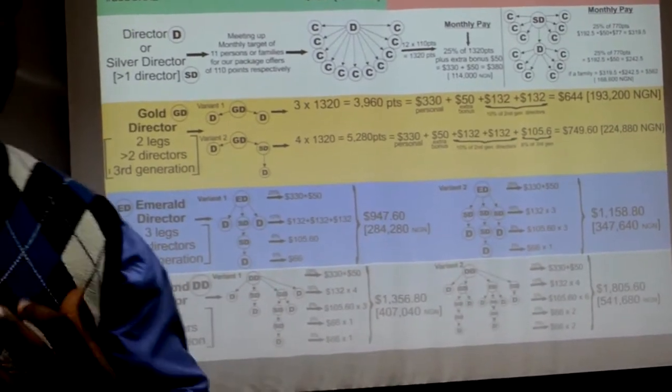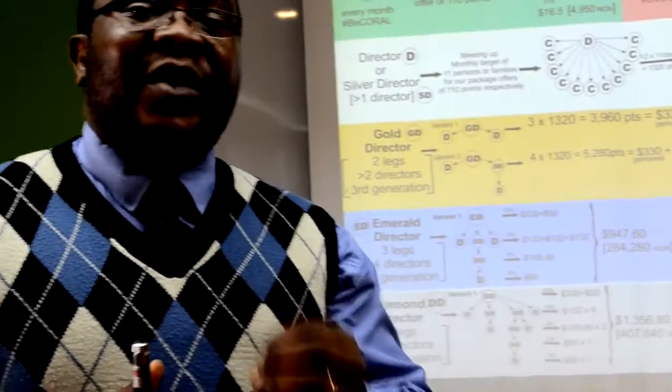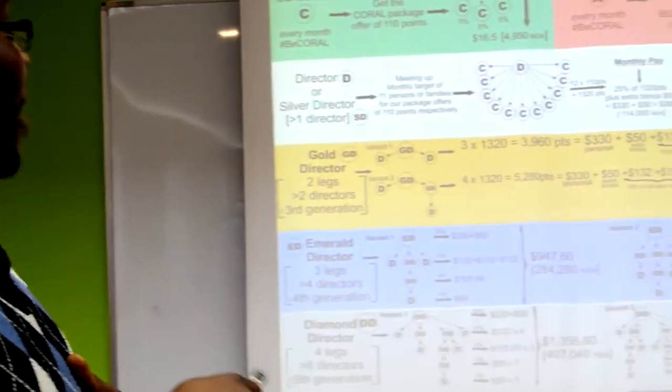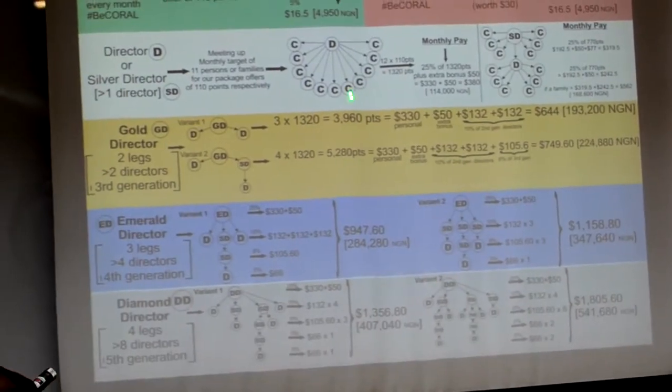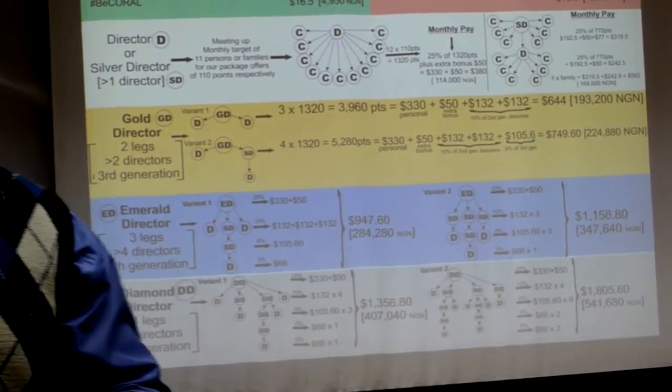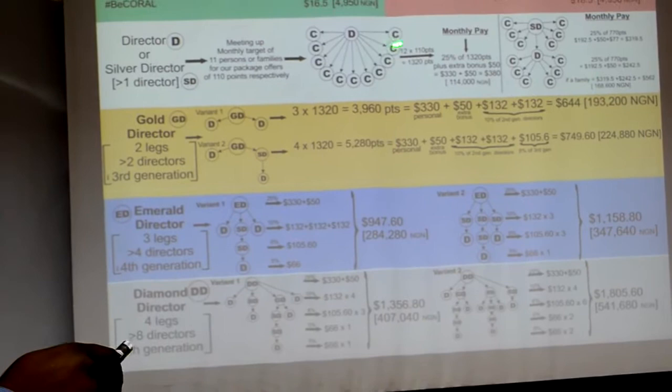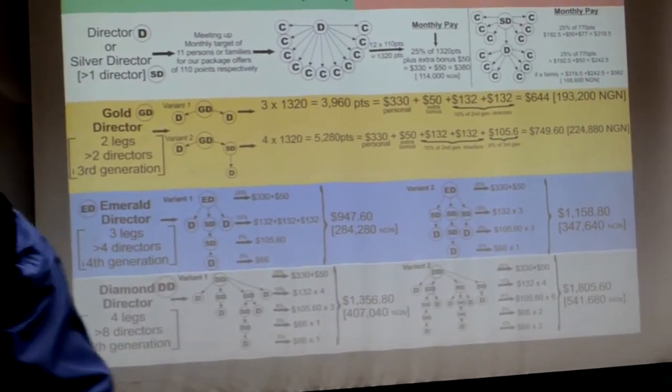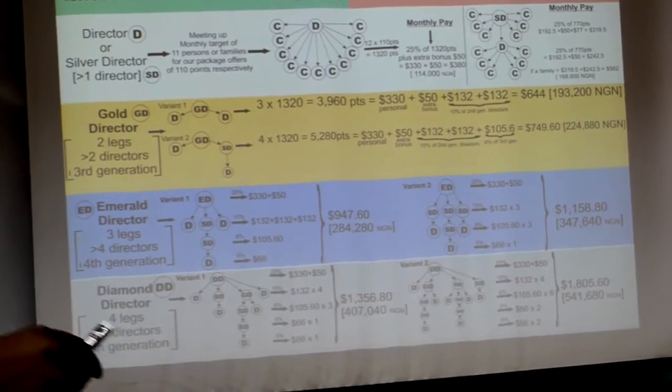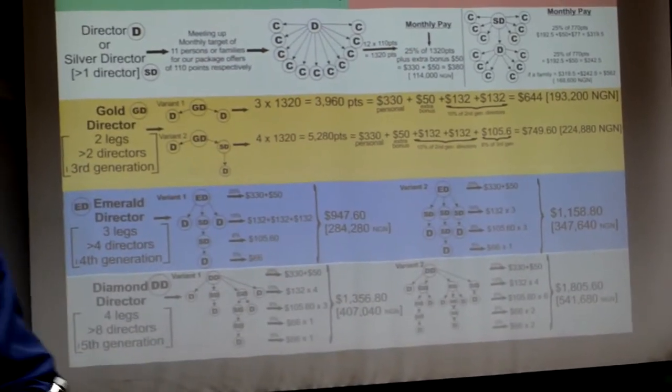Now, when you start as a partnership with Coral Club, your first stage, you are a director. Being a director, you have a target. Remember our package meeting up to 11 people? It means 11 people plus yourself because you do what you preach others to do. Now, it's about 12 points times 110 points is 1,320 points. And you can analyze the amount you can earn by doing that monthly.